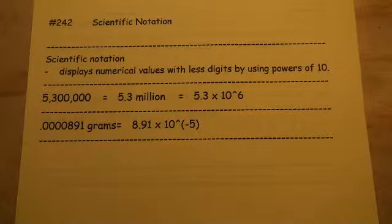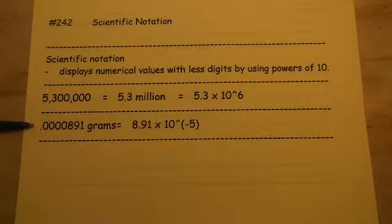That's a very common usage of scientific notation in real life. Lottery numbers is 5.3 million. It's oftentimes quite useful in science when you're taking very small measurements of various solutions that you're going to be putting in petri dishes and things like that. So if you had this number here, instead of saying 0.000891 grams, we would just call it 8.91 times 10 to the negative fifth grams.